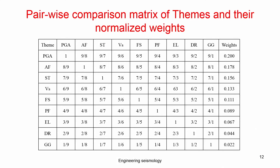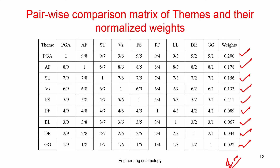To estimate the pairwise matrix, take the 9 parameters and divide each by the others. For example, PGA is assigned 9, amplification 8, and so on — so amplification divided by PGA gives 8/9, and like that you build the matrix with unity on the diagonal. You finally arrive at a normalized weight for each parameter. The cumulative sum of all normalized weights equals unity.